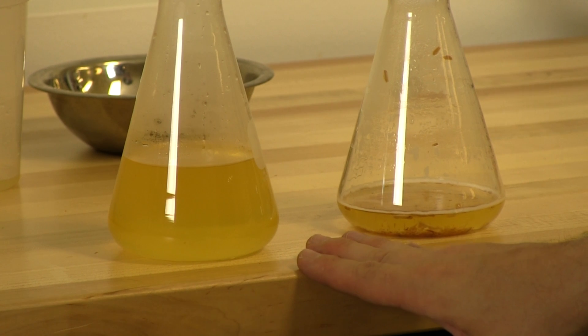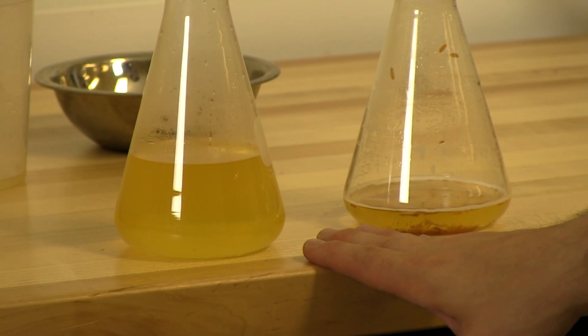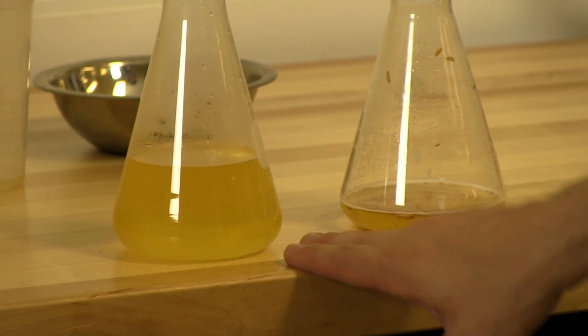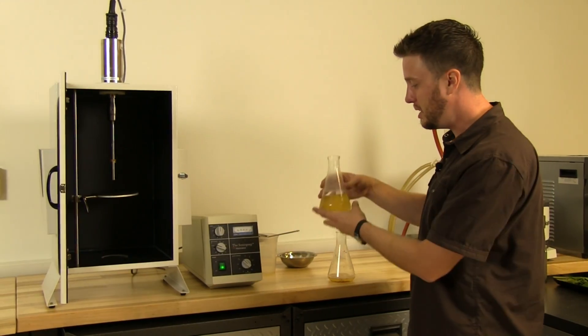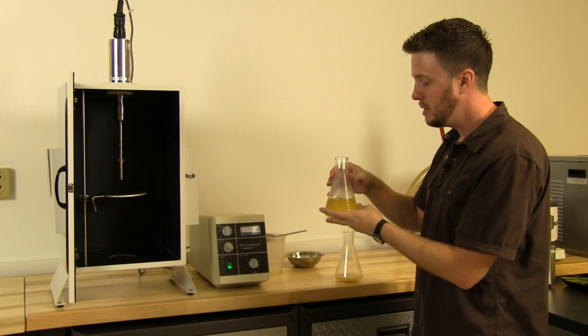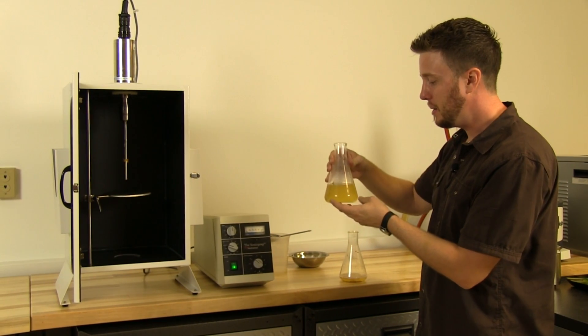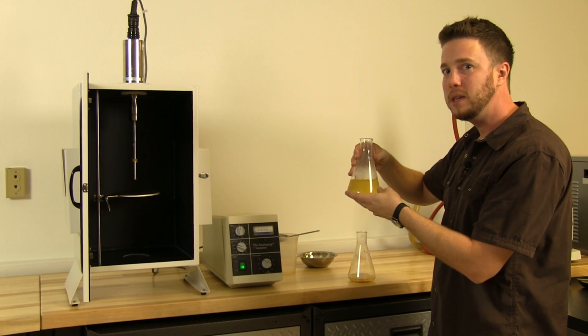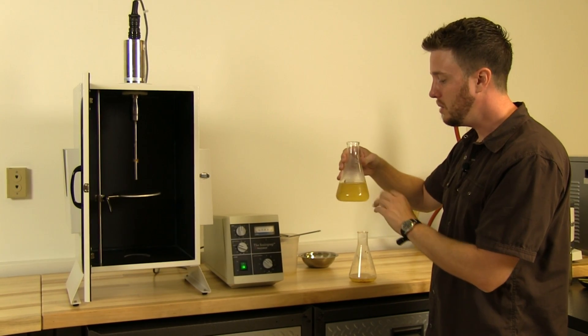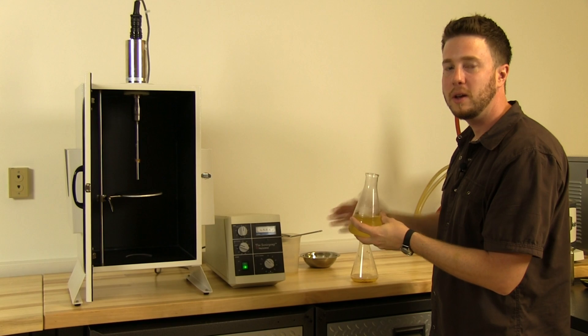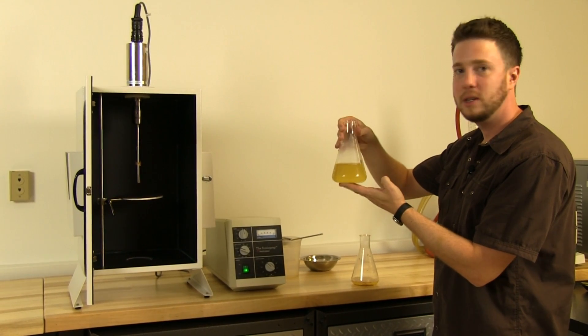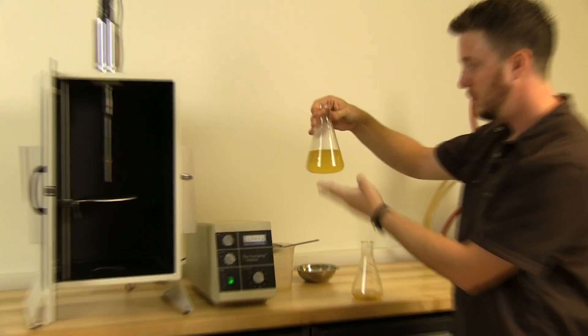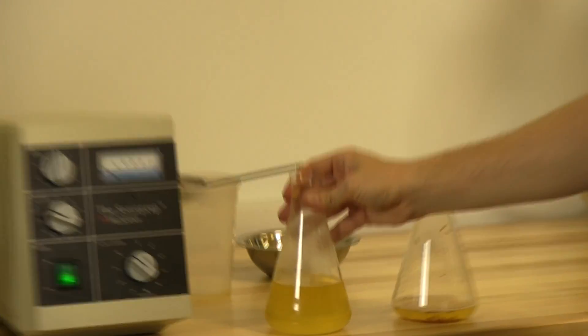But here we've taken an un-aged wine and in just about two minutes added a couple years of oak to it. The applications you can do with different sauces, stocks, different bases to your cocktails. You can add wood, you can add spices, you can get a ton of different infusions into this with the Sonic Prep.